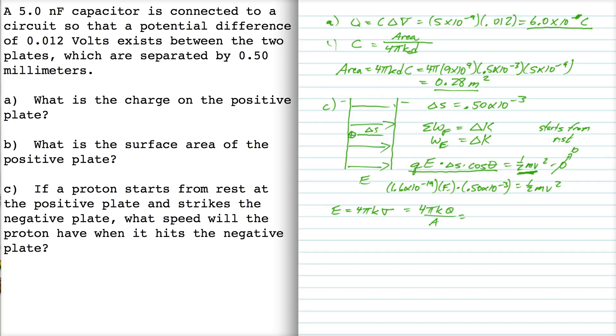And we can do that here because we know Q from up here and we know the area from right here. So I can say it's 4 times pi times the Coulomb constant times the charge divided by the area, 0.28. And if I work that calculation through, I get 24.